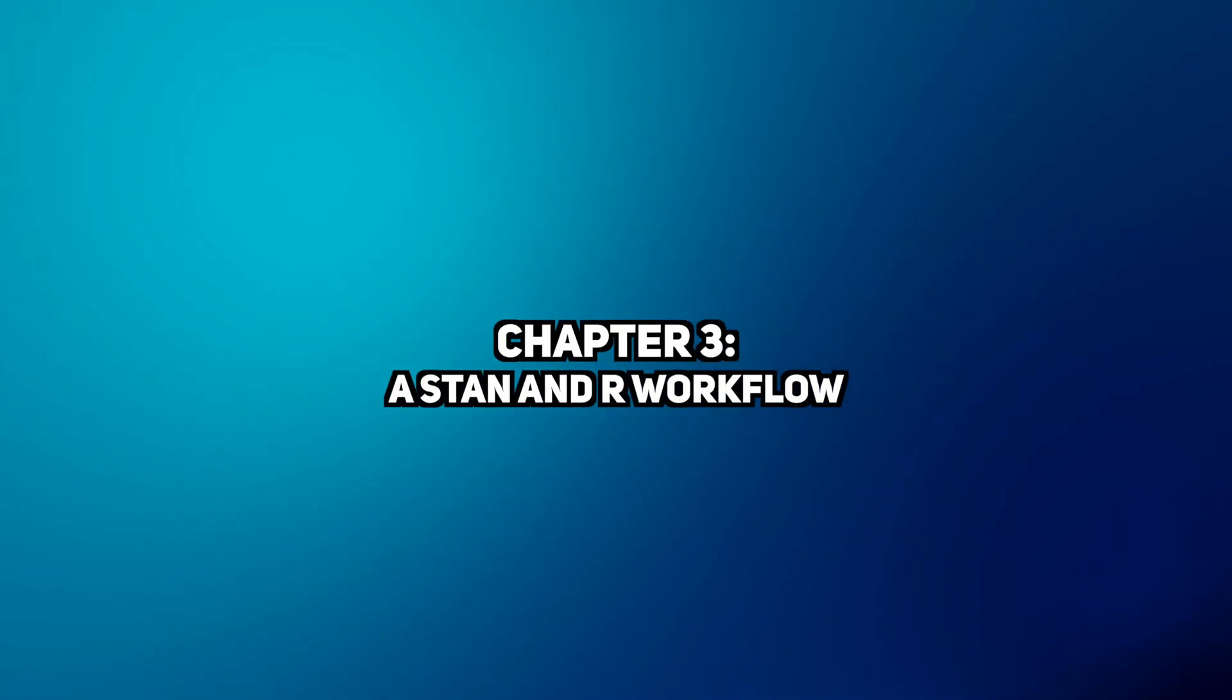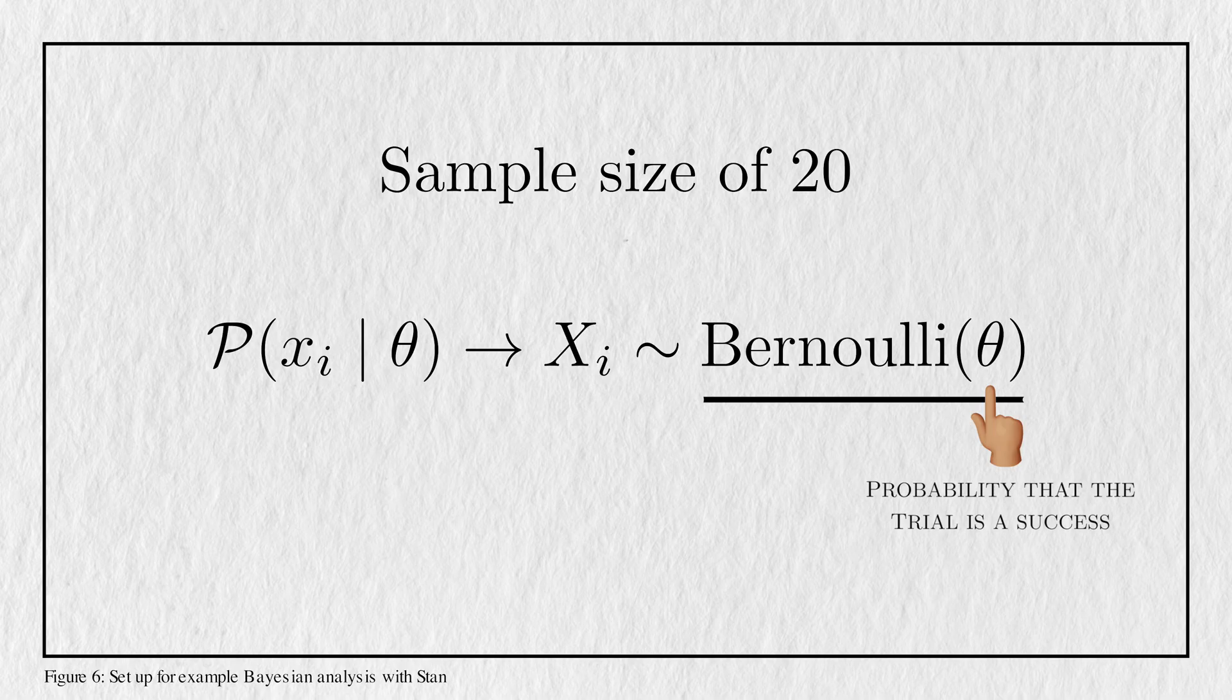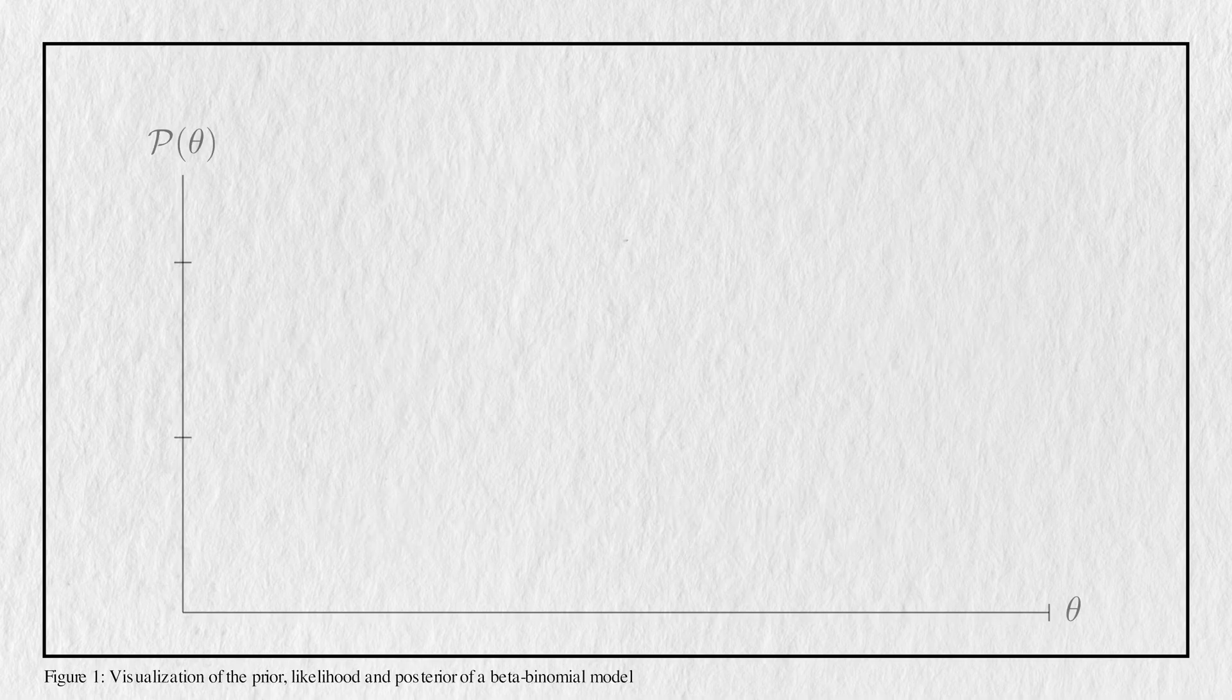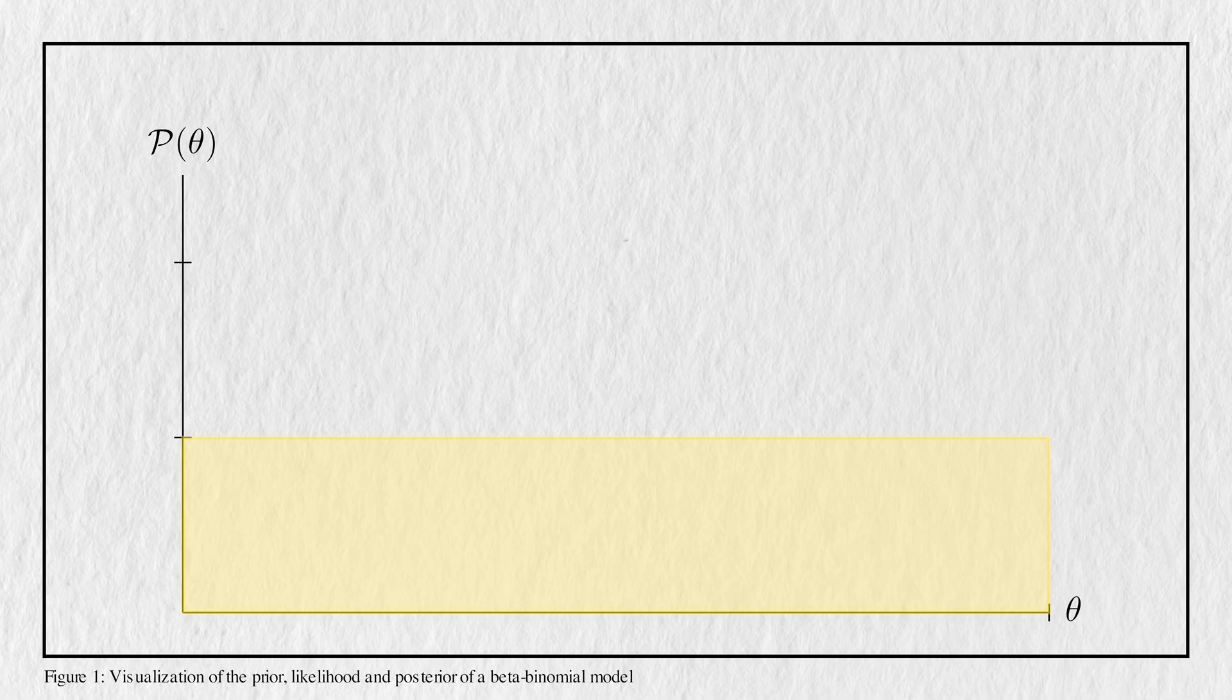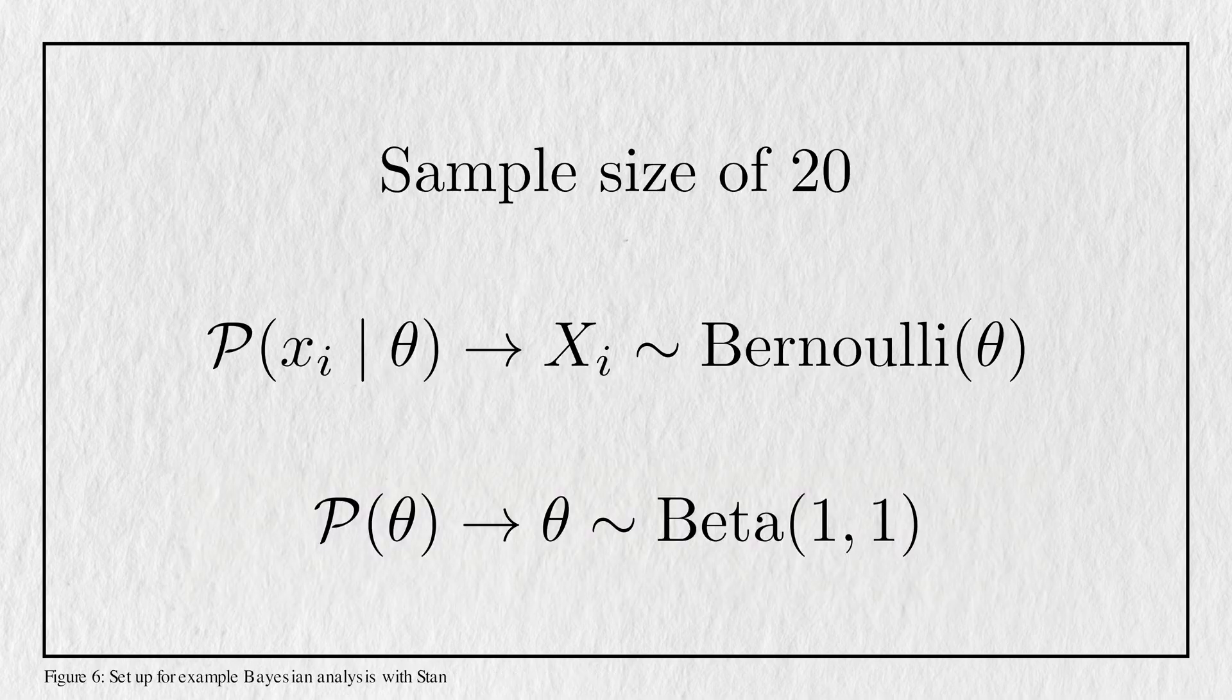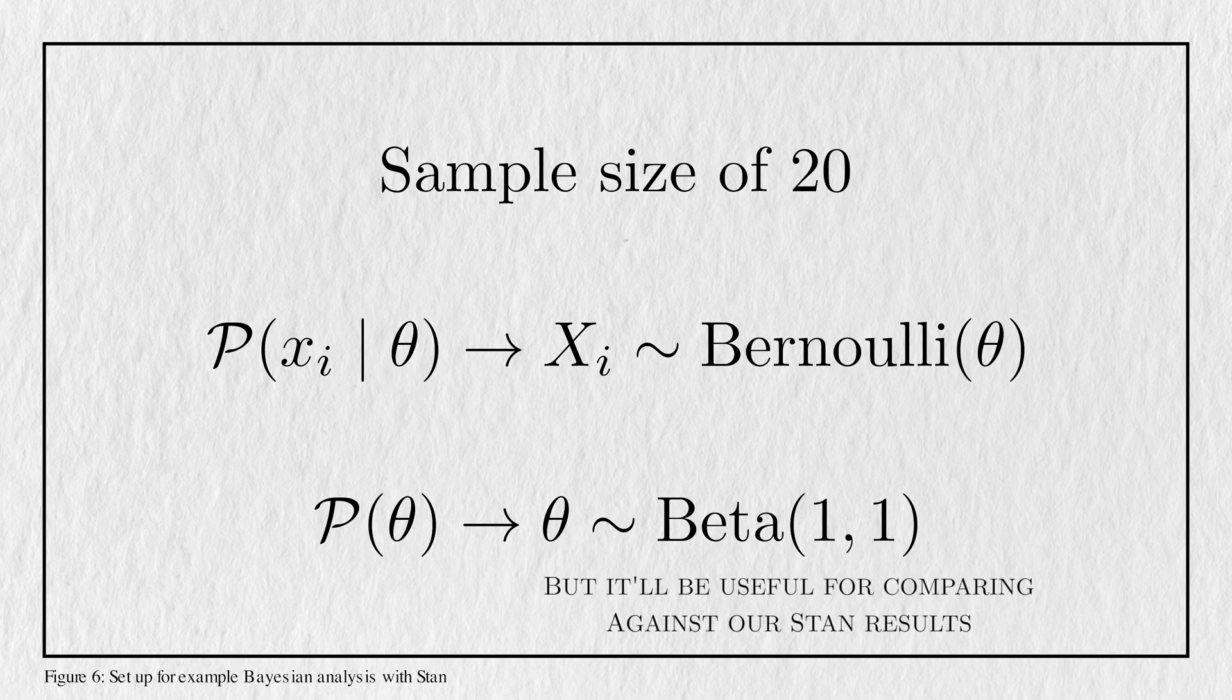I'll be using a simple Bayesian analysis to guide this tutorial. In this example, we have 20 binary trials, and I'm going to model each one as a Bernoulli trial with the parameter theta, where theta now represents the probability that the trial will take the value 1. I need a prior distribution for theta, so I'm going to use a beta distribution with both parameters set to 1. This creates a uniform distribution over all the possible values of theta, and it reflects a belief on my part that any value is just as good as any other. Like I just showed you earlier, the beta prior is actually a conjugate prior, which means we don't actually need to use STAN to do this analysis. While that's true, this conjugacy will still be helpful in drawing parallels to how the analysis would be done in STAN.